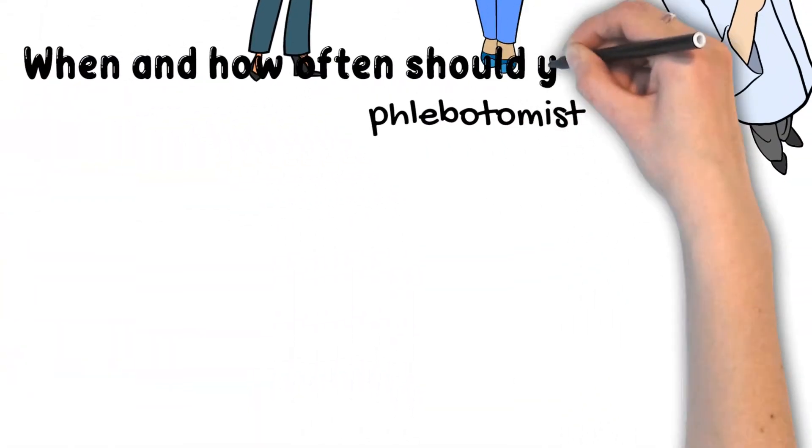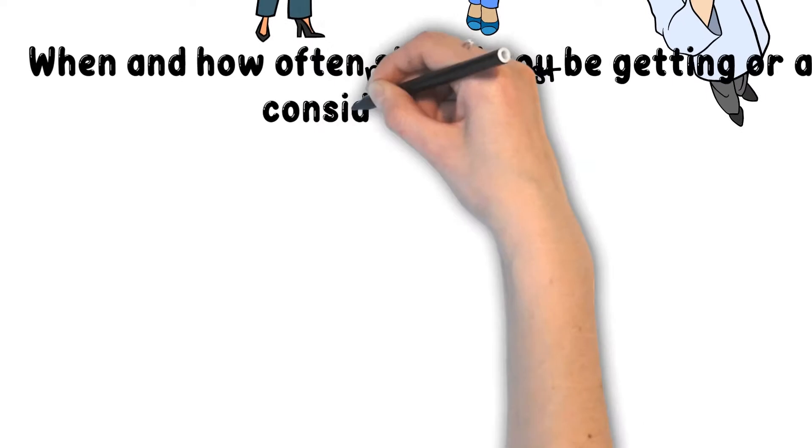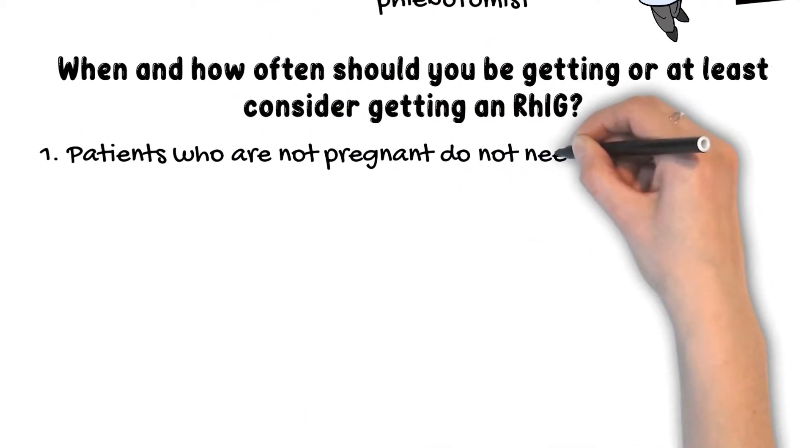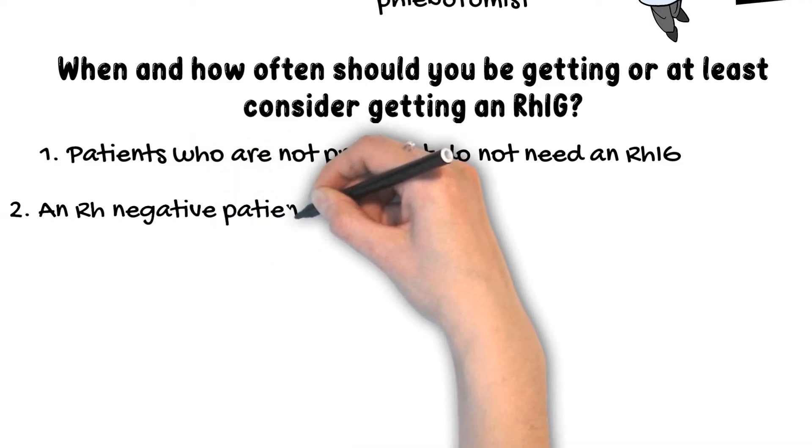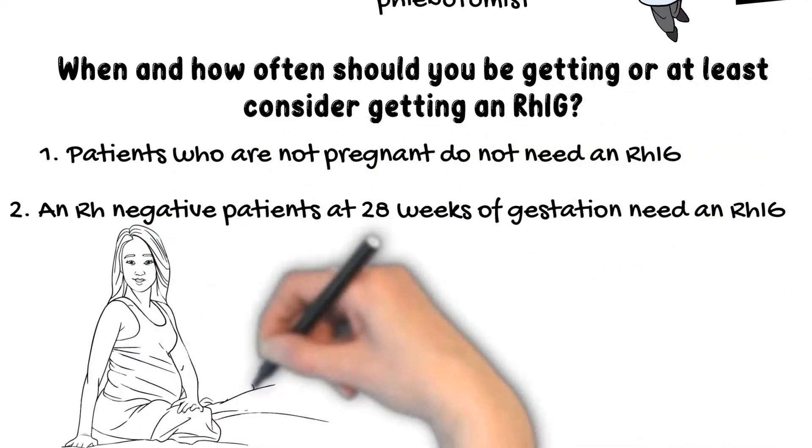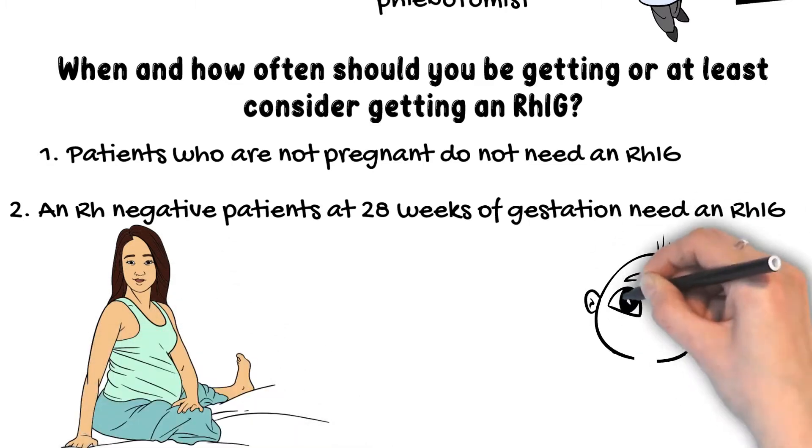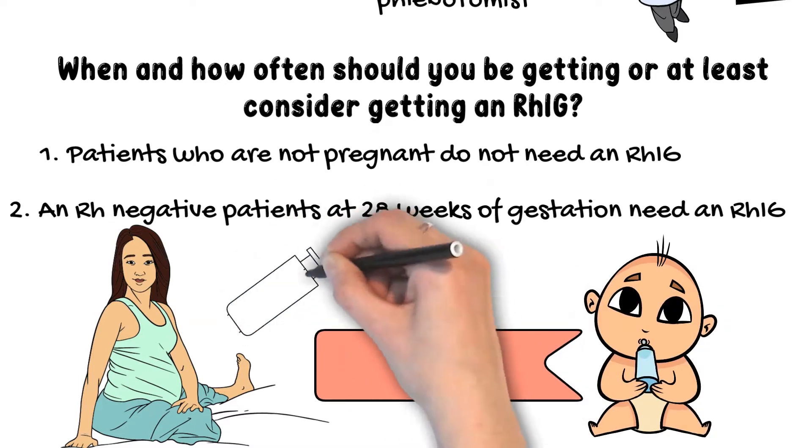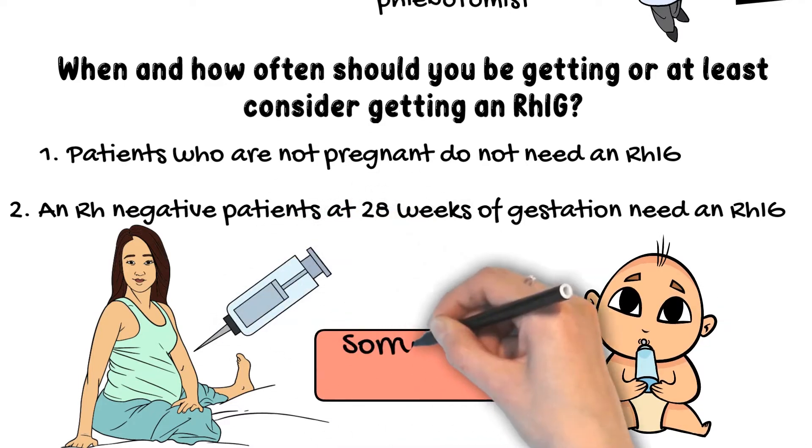When and how often should you be getting or at least consider getting RHIG? Patients who are not pregnant do not need RHIG. Normally, pregnant patients with RH negative should be getting RHIG around 28 weeks of gestation and another dose once the baby is delivered, unless the newborn is also an RH negative baby.